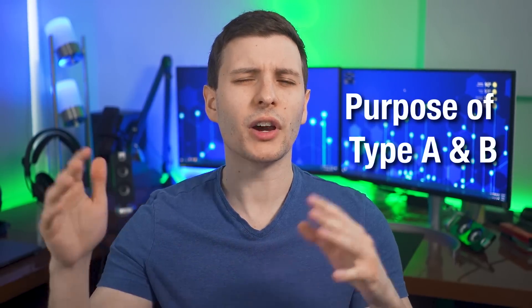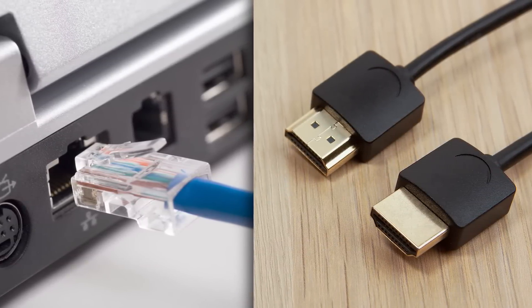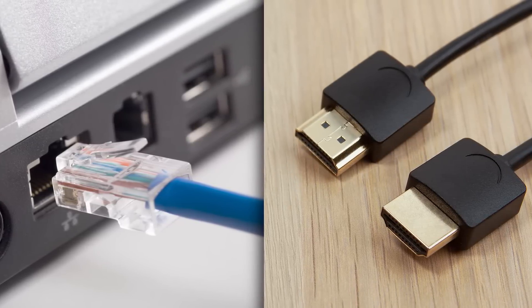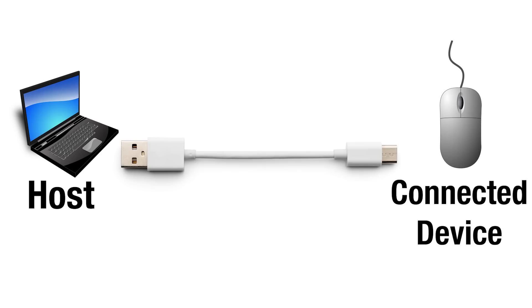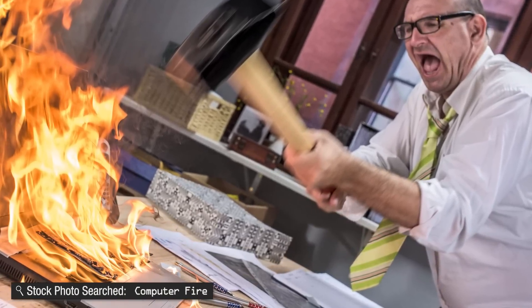Before getting into more detail about all the weird connectors, I want to give some context and explain what this whole type A and B thing is. Unlike other data connection cables like ethernet and HDMI — which are bi-directional — USB is directional. There's always going to be one device which acts as the host and another which is the connected device. The host device always provides power to the connected device, so you need to make sure two host devices could never connect directly to each other, because then they would be providing power to each other and potentially fry things out.